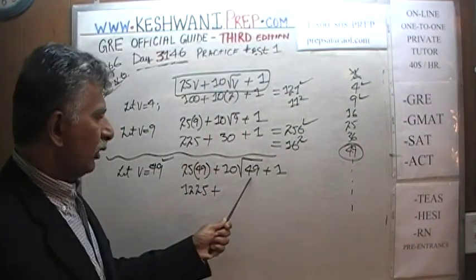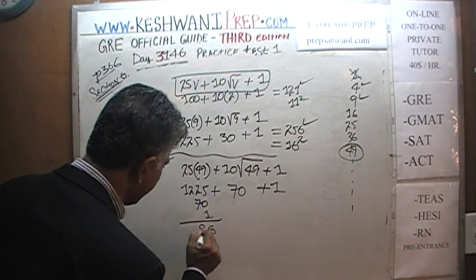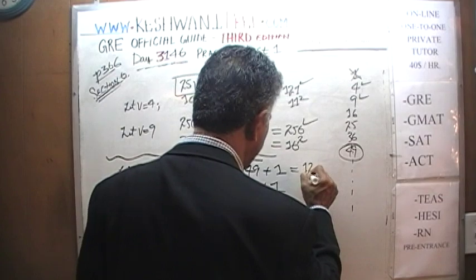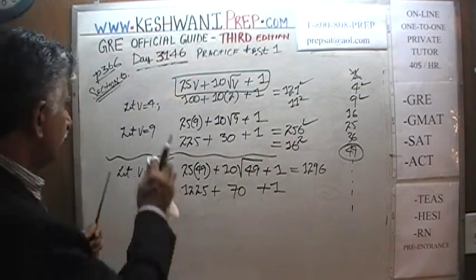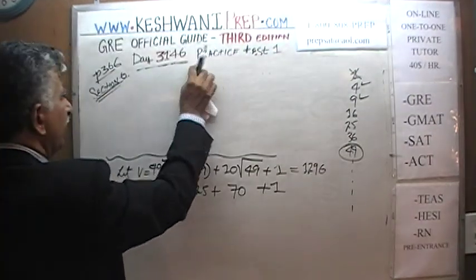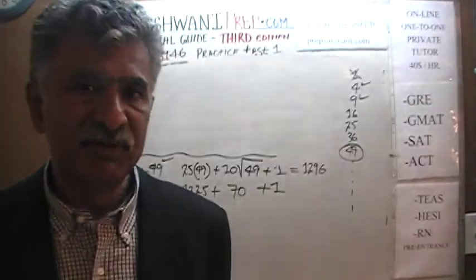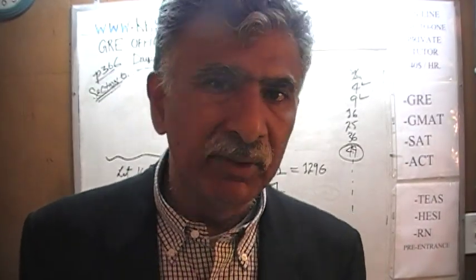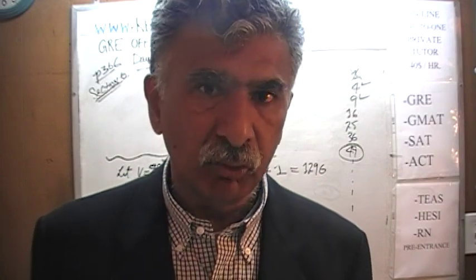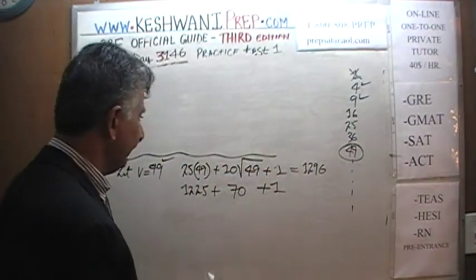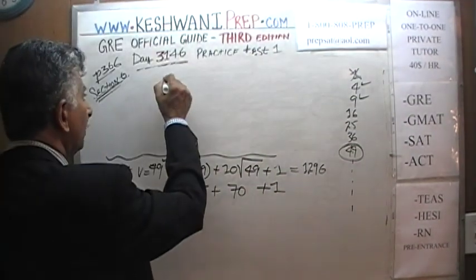Is 1296 a perfect square? We know 30 squared is 900 and 40 squared is 1600, so the square root falls between 30 and 40. Since the unit digit is 6, we need a number ending in 4 or 6. Trying 36: 36 times 36 equals 1296. Yes — 1296 is the square of 36, so this quantity is indeed a perfect square. You have to know basic squares by heart, such as 25 squared equals 625.